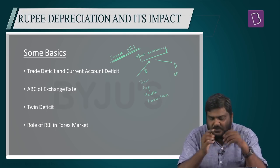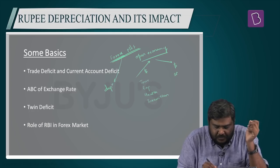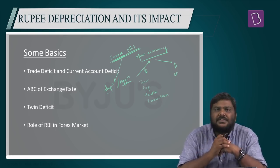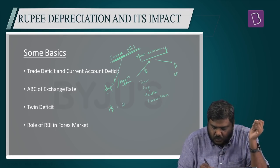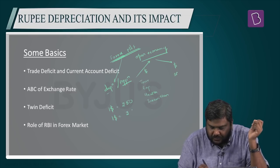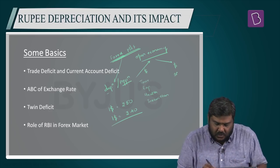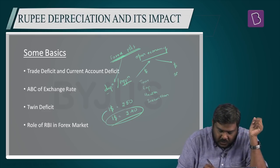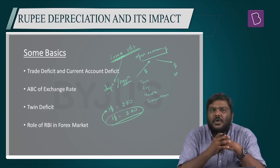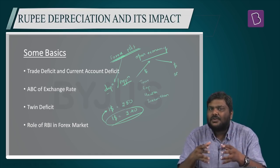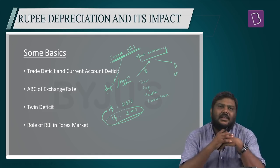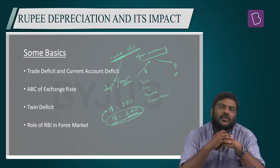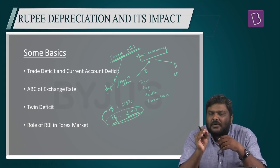The terms you come across in newspapers — depreciation and appreciation — let's understand them with an example. Assume today 1 dollar equals 40 rupees, and tomorrow the exchange rate becomes 1 dollar equals 50 rupees. Yesterday, for every 1 dollar I paid 40 rupees, but today to purchase the same dollar I pay 50 rupees. In terms of cents: yesterday for every 1 rupee I could purchase 2.5 cents, but today for the same 1 rupee I can purchase only 2 cents.